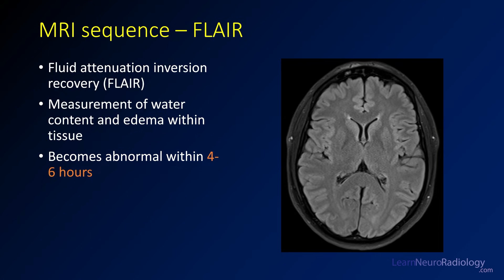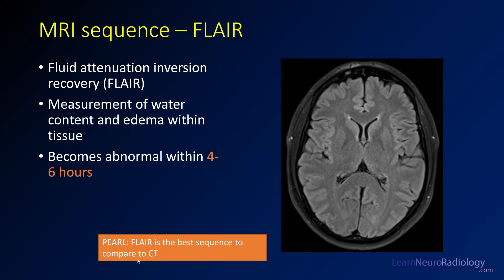FLAIR, on the other hand, is a measure of tissue water, very much like CT. When there's greater water content, it gets bright in an area of ischemia, showing territorial regions. But FLAIR doesn't become abnormal for about four to six hours. If you're comparing to a CT, the two are comparable — they're inverted because more water is bright on FLAIR and dark on CT. This is a useful tip especially when you're beginning to interpret these images.